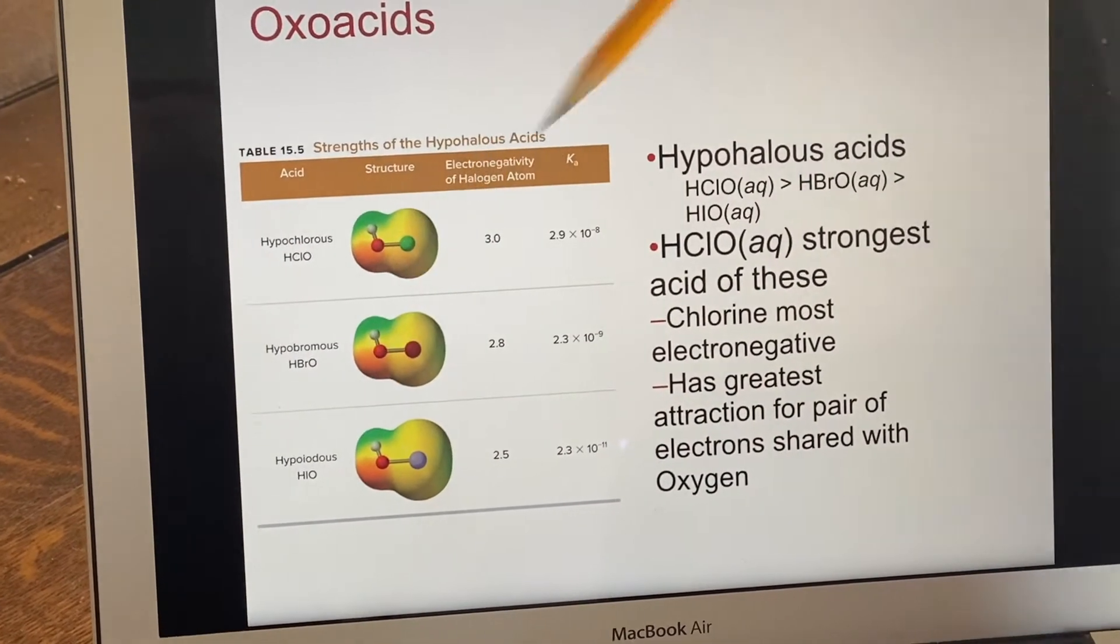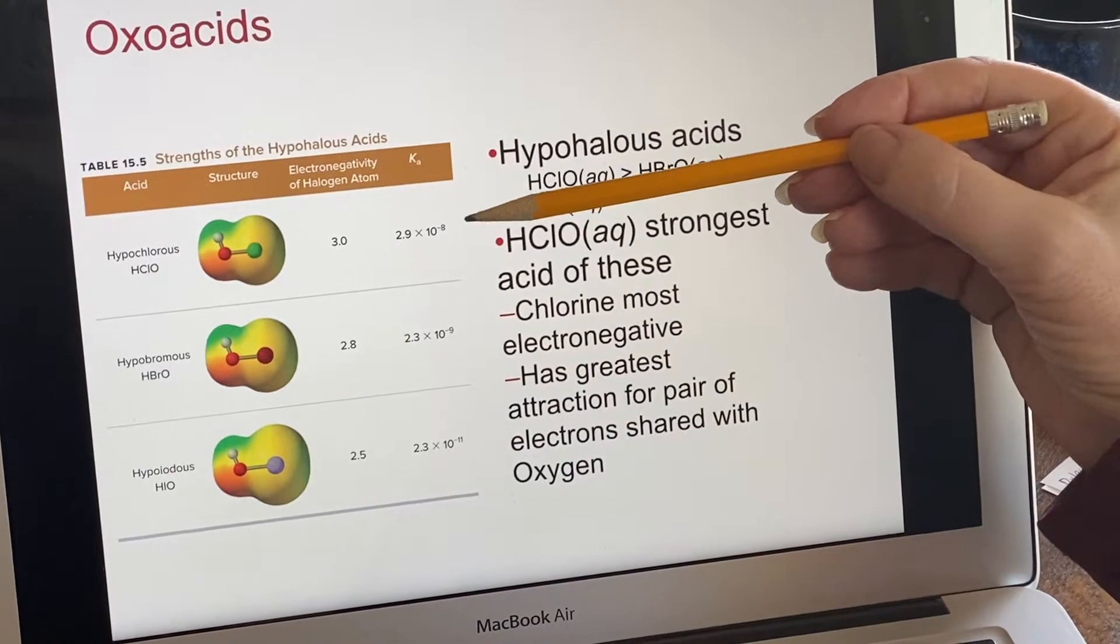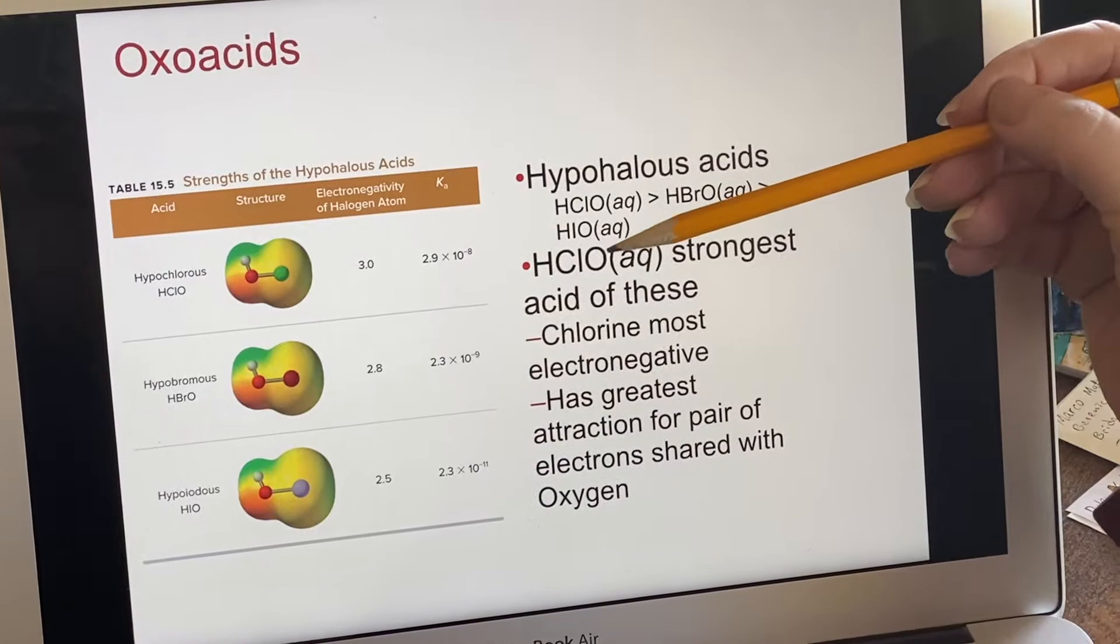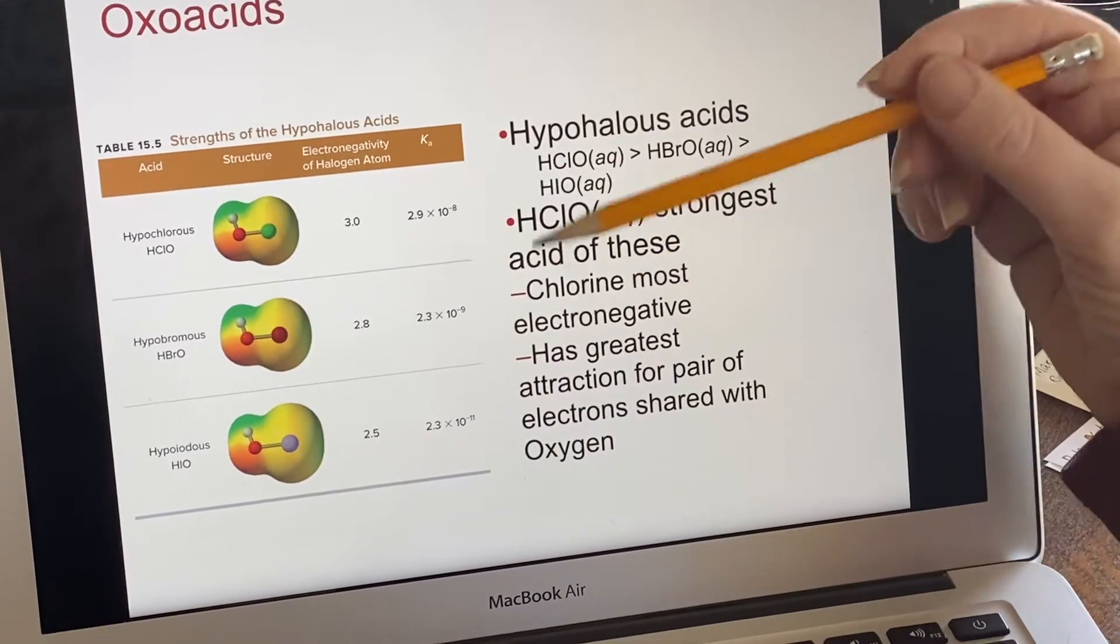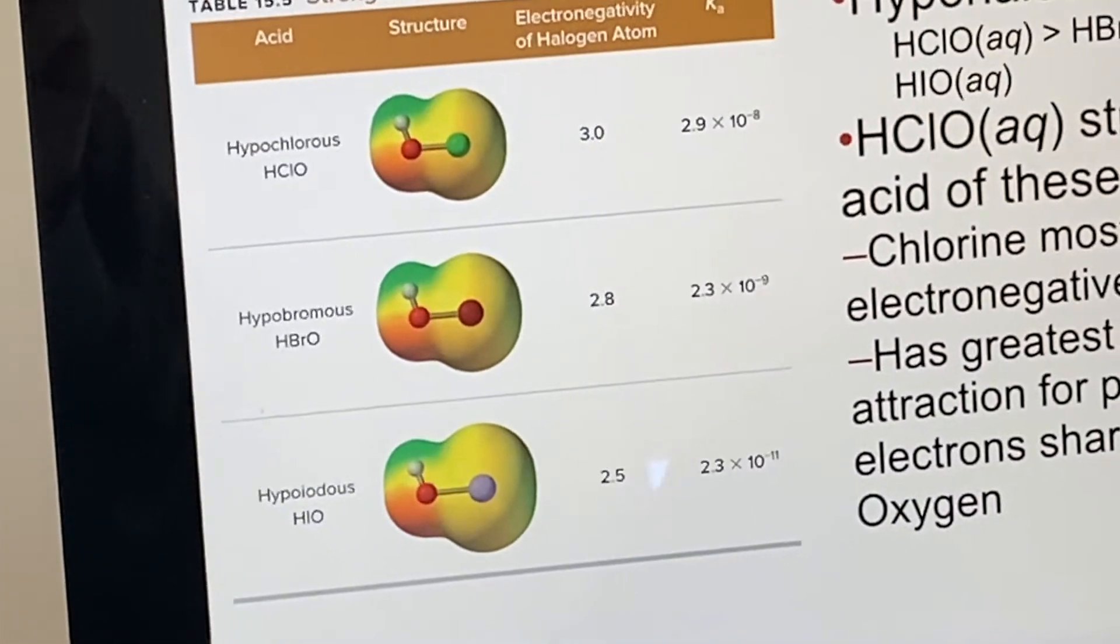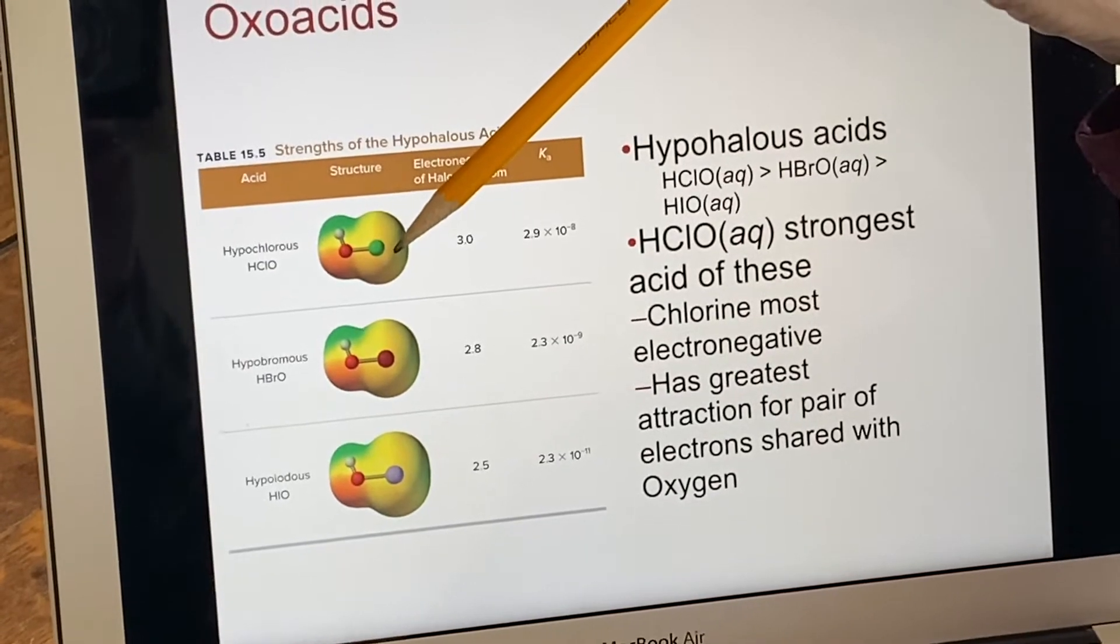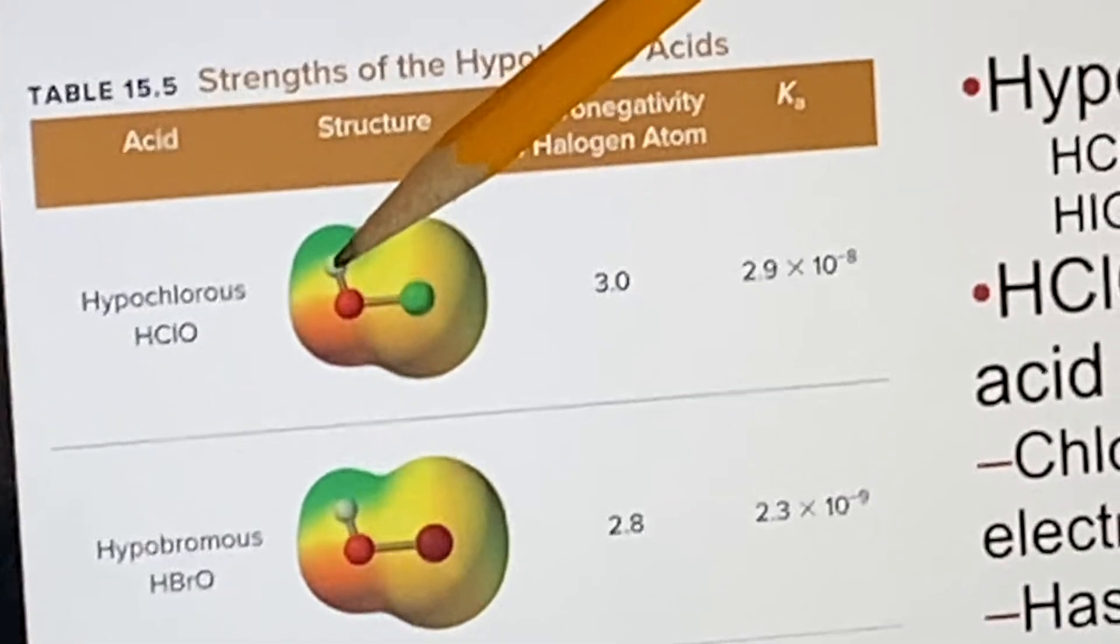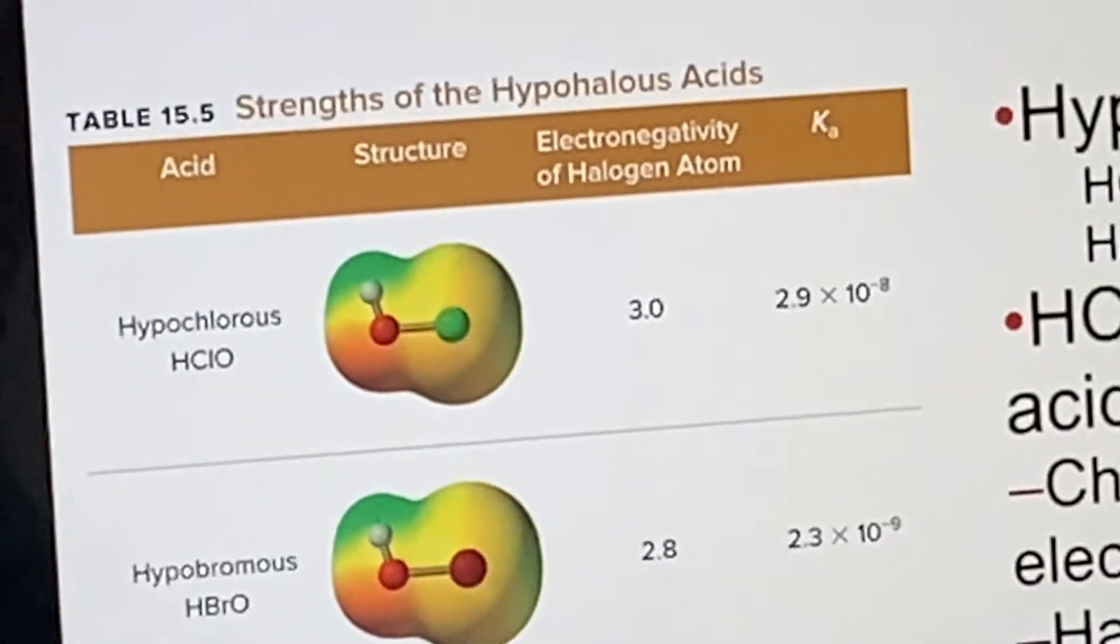they only have a single oxygen in the acid. Of these, the strongest based on Ka's is the hypochlorous acid. Why? Because the chlorine is the most electronegative of the three that we're talking about: the chlorine, the bromine, and the iodine. Since chlorine is the most electronegative and it's sitting out here, it is trying to pull electrons away from the area where the hydrogen is, which allows the hydrogen to escape as an H+ ion most effectively.